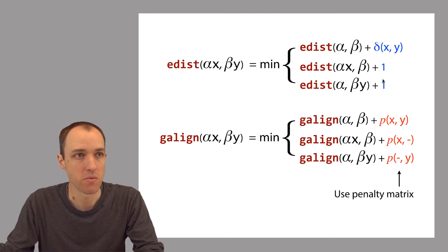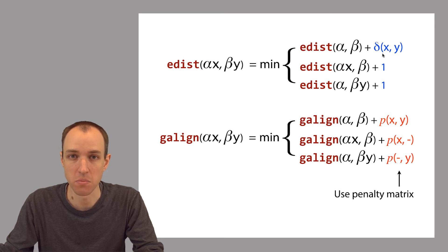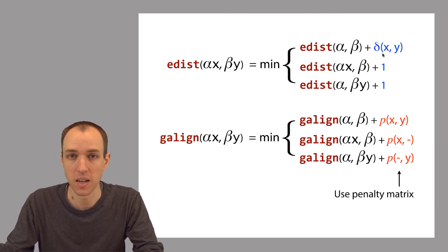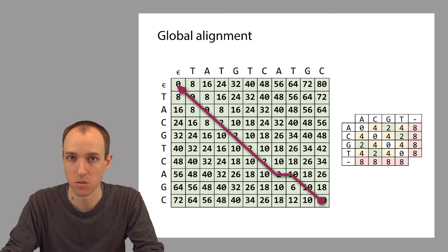Remarkably, we barely have to change our edit distance algorithm at all to accommodate this new penalty matrix. When filling in our dynamic programming matrix, all we really have to change is the value added when we calculate the three contributions: the diagonal, vertical, and horizontal. For an insertion or deletion — a vertical or horizontal move — we previously added one; now we look up a value in our penalty matrix. For a diagonal move, we previously used a delta function to check character equality; now we do a lookup in the penalty matrix. The algorithm is otherwise identical, including the traceback. So that's global alignment — here's a filled matrix and traceback, all analogous to edit distance.